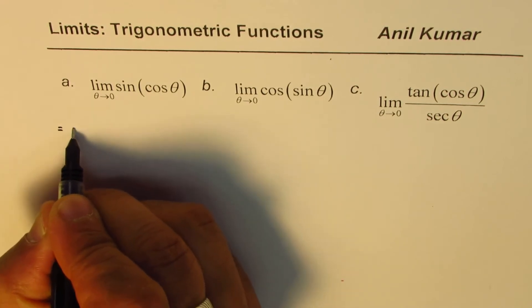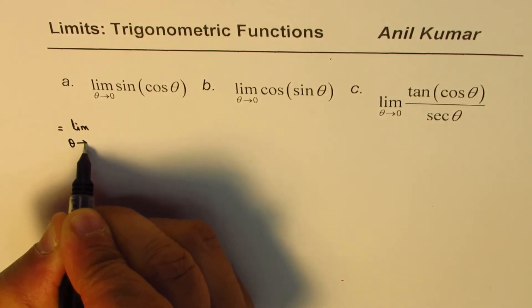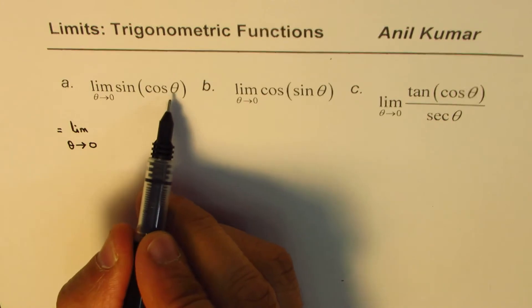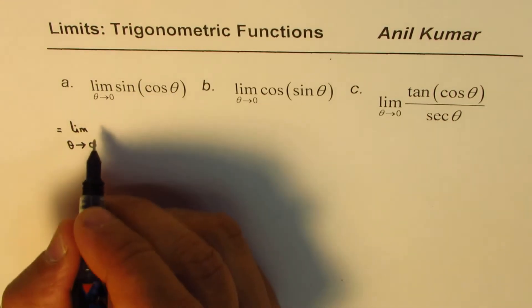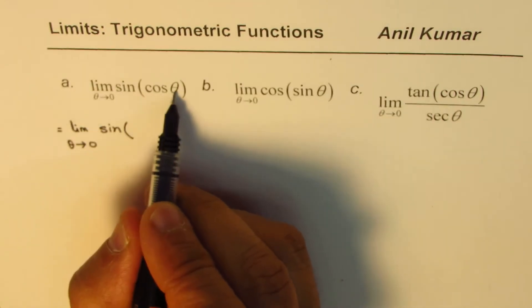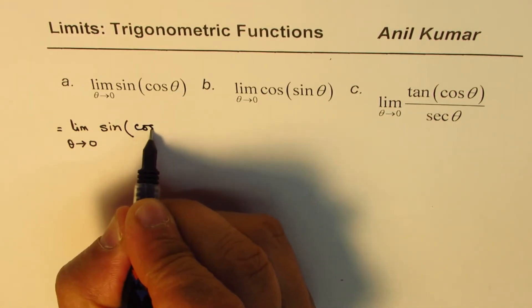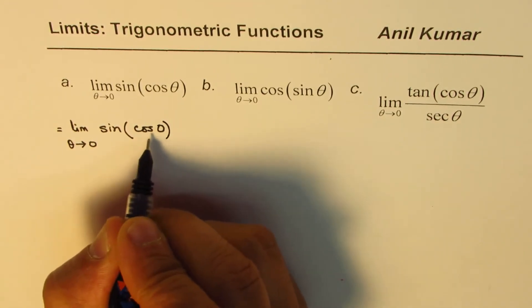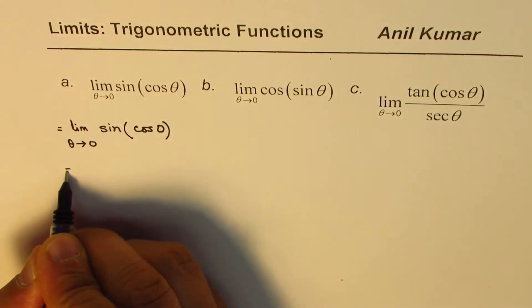I could write this as limit theta approaches 0. So if I substitute 0 here, what do I get? I get sine, and if I write 0 here, I get cos of 0. Now cos 0 is 1.